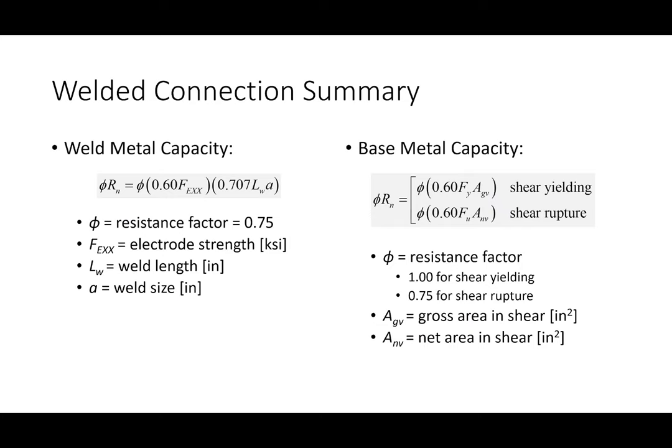To summarize: weld metal capacity = φ × stress × area, and base metal capacity = φ × stress × area. In both cases the stress is 0.6 times some limiting value. For base metal there are two checks — yielding and rupture — giving two different φ values. Once you start applying these in examples, you'll realize this is actually really easy.